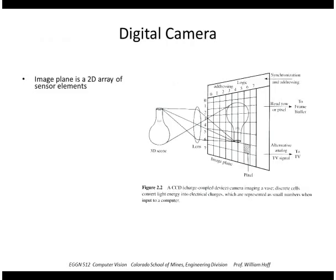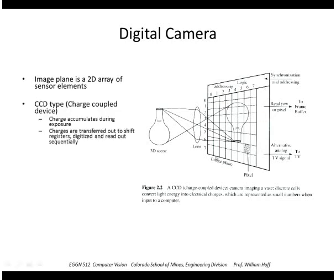And well, let's look at a digital camera, namely a CCD camera, which is the most common type. CCD camera consists of a two dimensional array of sensor elements. The CCD stands for charge couple device. The sensor elements accumulate charge during the exposure. And then once the exposure time has finished, those are transferred out and digitized, sent to a computer or a monitor.